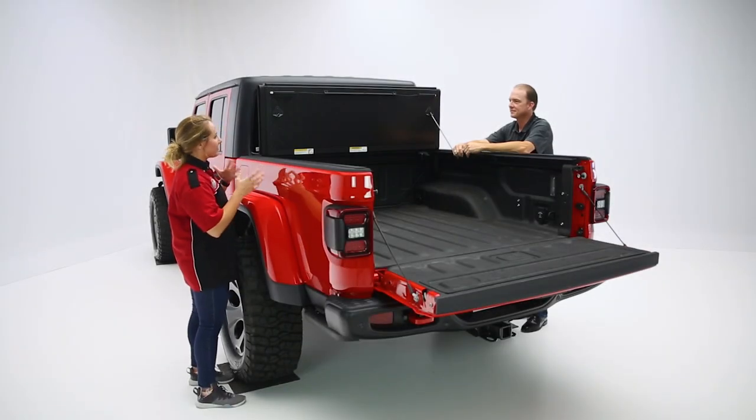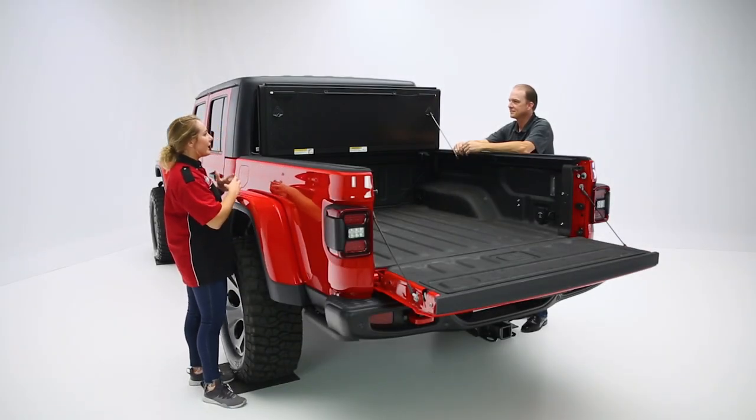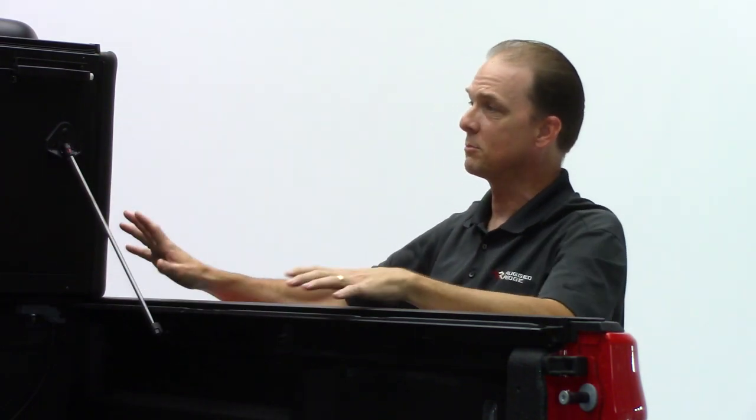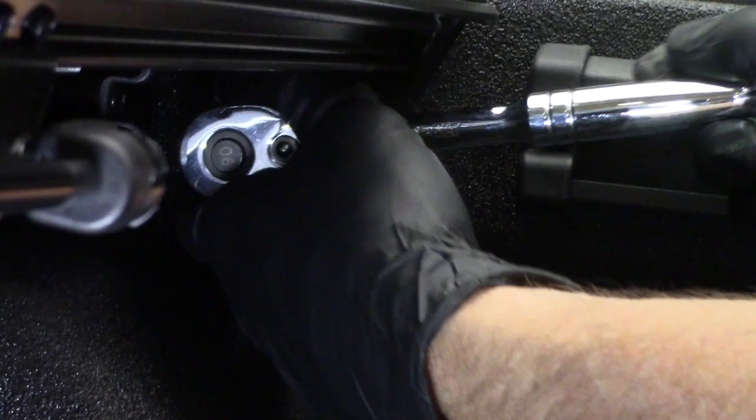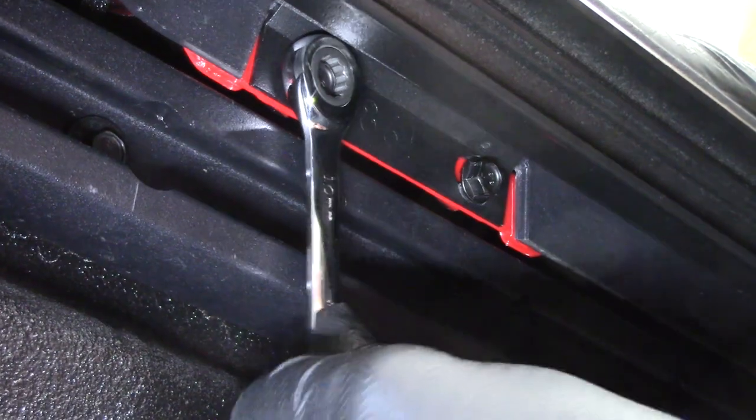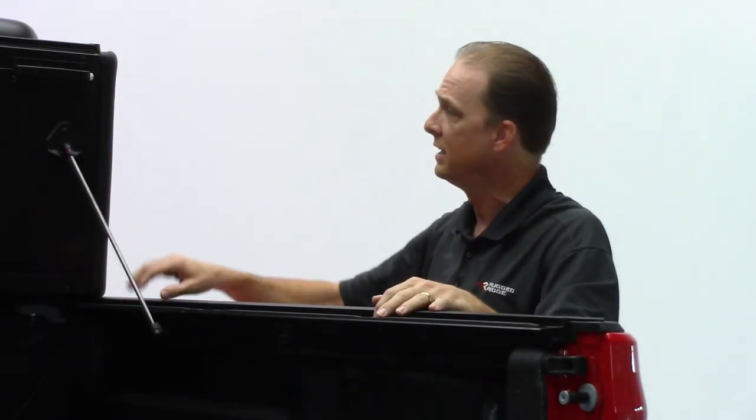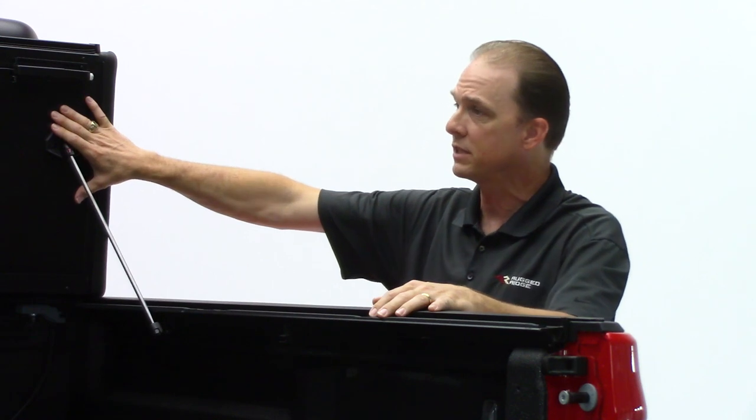So as we're looking at the installation for this, what are some of the things that comes with it and the process? One of the nice things about this kit is it comes pretty much fully assembled. You're going to get two full rails that mount on either side to factory existing locations, so you're not having to drill any holes. It comes with all the hardware you're going to need. The bed cover itself comes fully assembled.